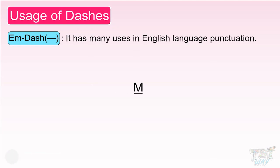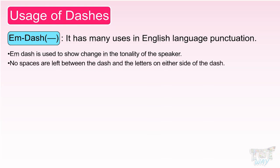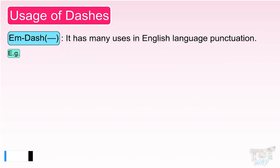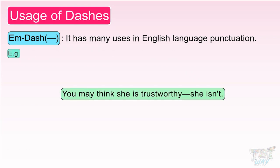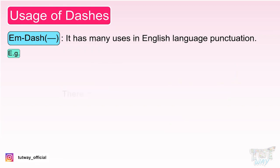Now let's learn what is M dash. M dash has the length of the letter M. It has many uses in English language punctuation. M dash is used to show a change in the tonality of the speaker. No spaces are left between the dash and the letters on either side of the dash. For example: 'You may think she is trustworthy—she isn't.' You can see M dash specifies the beginning of the part of the sentence that has a different mood from the rest of the sentence. 'There may be a landslide—you never know.'